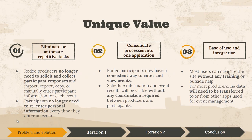The second piece of unique value is consolidating the process into one application. Participants now have a consistent way to enter and view events in one application — they don't have to go searching around for event information. This also means that event producers and participants will be able to view schedule information and results without having to coordinate with each other; they can just interact with the website directly. The third piece of unique value is ease of use and integration — most users can navigate the site without any training, and no data will need to be transferred between apps.